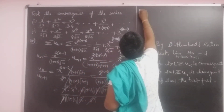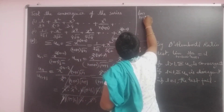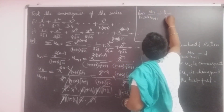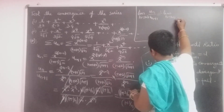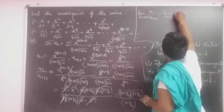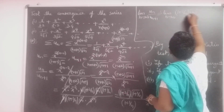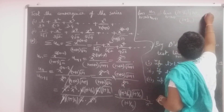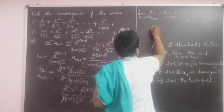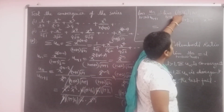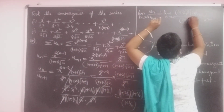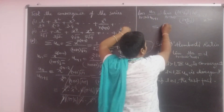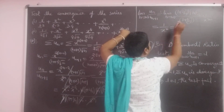Now applying the limit: lim(n→∞) uₙ/uₙ₊₁ = lim(n→∞) [(1 + 2/n) · √(1 + 1/n) / (1 + 1/n)] · (1/x²). As n→∞, all terms with 1/n → 0, giving (1 · √1 / 1) · (1/x²) = 1/x². So L = 1/x².